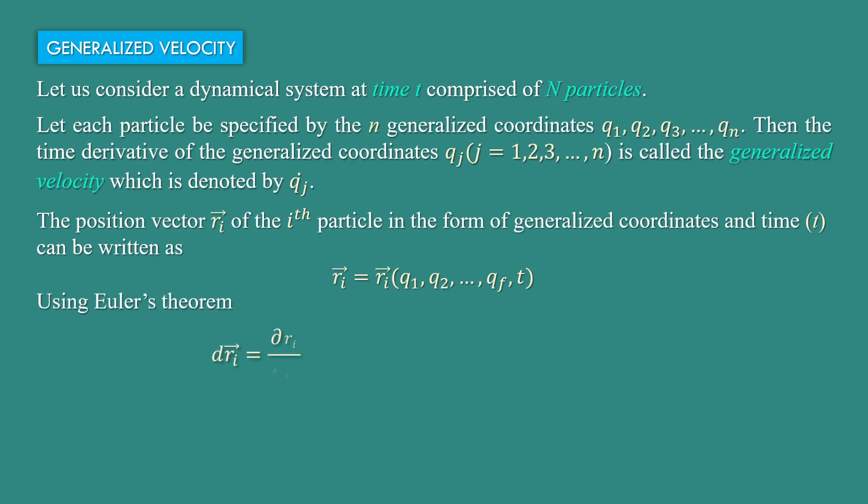Using Euler's theorem we get d ri equal to del ri by del q1 into dq1 plus del ri by del q2 into dq2 plus dot dot dot up to del ri by del qf into dqf, and the last term is given by del ri by del t into dt.